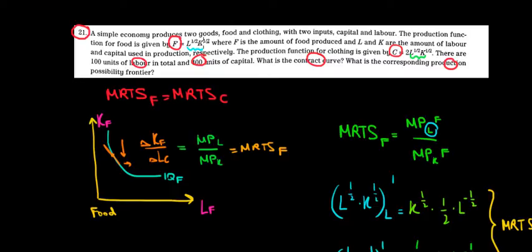This should signal that we're dealing with constant returns to scale. This is a property of a constant returns to scale function, and recall that for such a function we will have a linear relationship between food and clothing in our production possibilities frontier — in other words, a straight line.